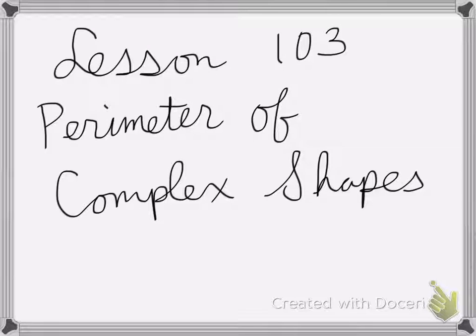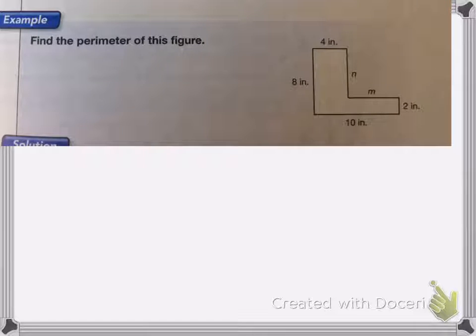All right, so lesson 103 is on the perimeter of complex shapes. Here I have this complex shape, and I need to find the perimeter of this figure.